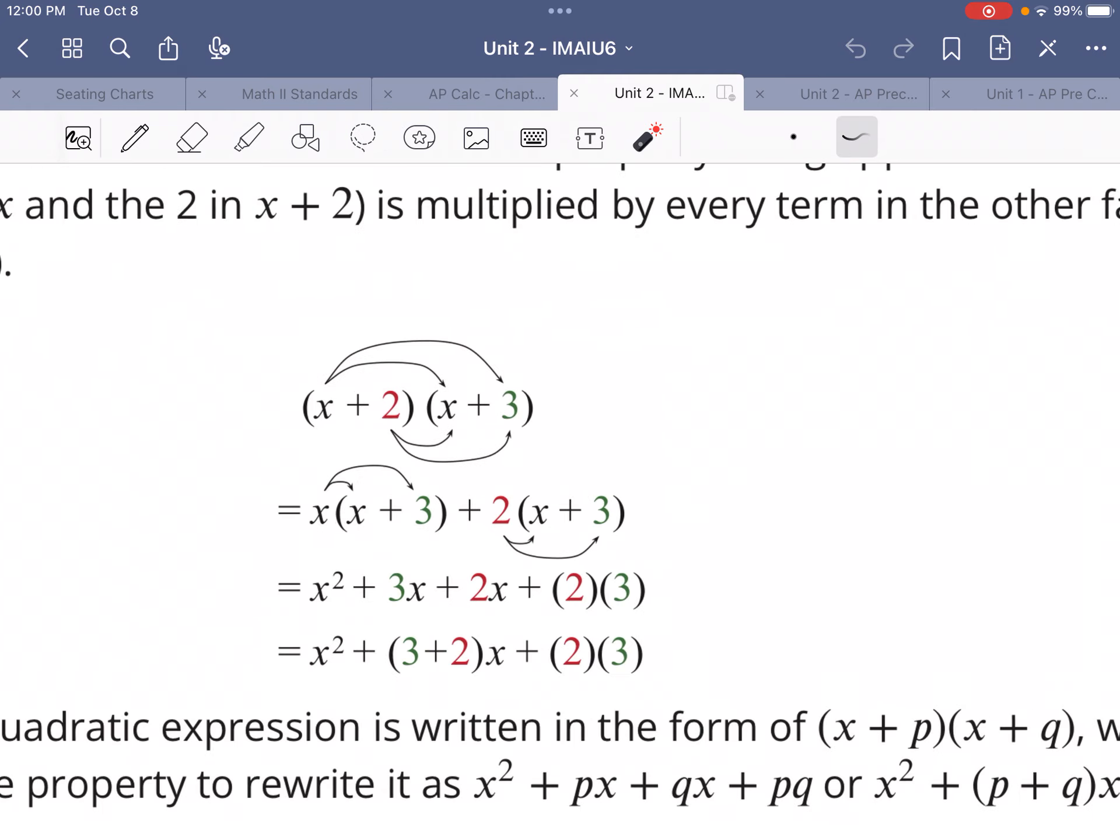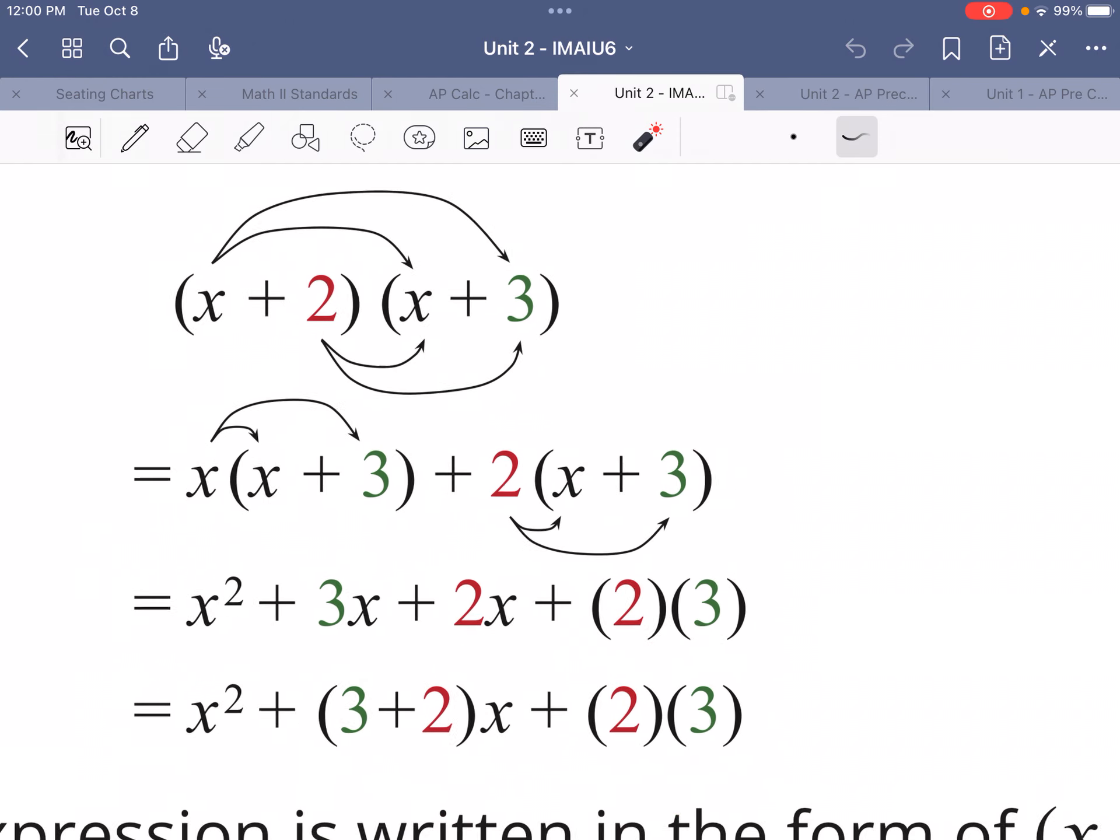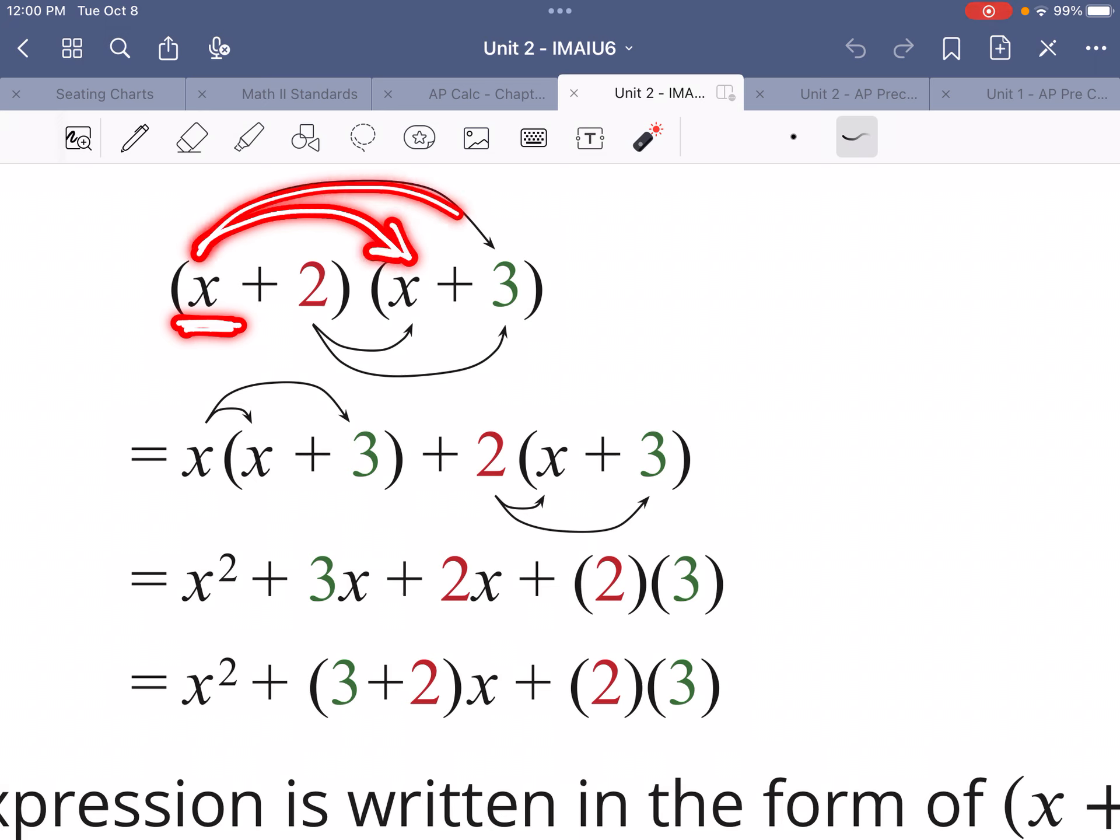What we can do is use the idea of the distributive property and expand it beyond just a simple x times (x + 2). We can have much more complicated distributive property type problems. To find an equivalent of (x + 2)(x + 3) without any parentheses, we can take this x and multiply it by x and by 3, and we would get x² + 3x.